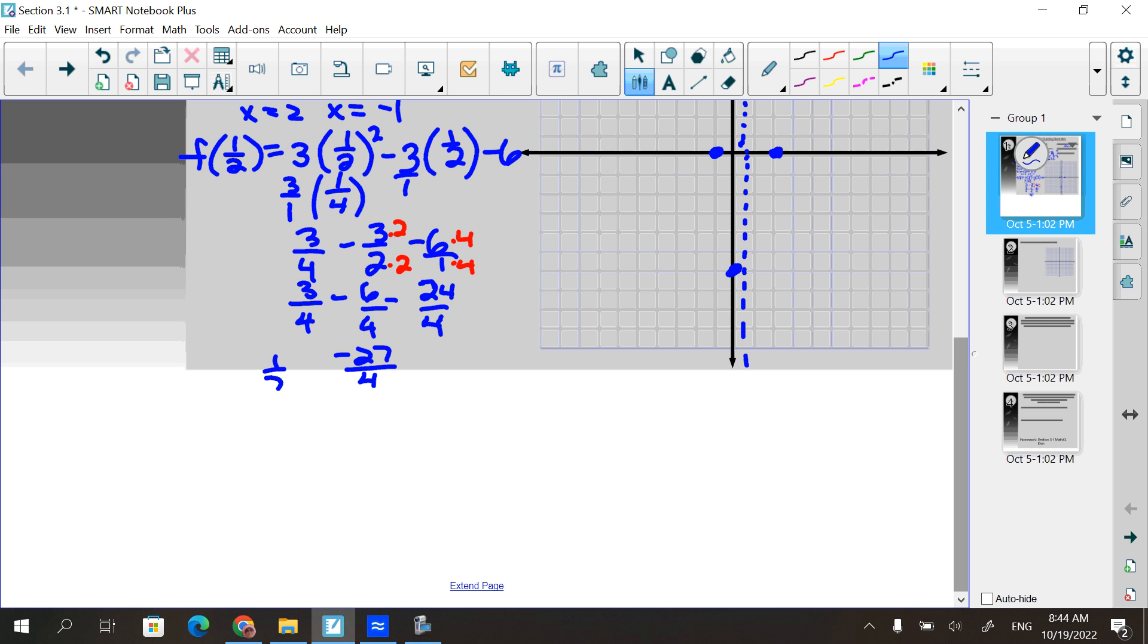So three minus six is negative three and negative three minus 24 is negative 27 fourths. So that means our vertex is at this point right here. Now negative 27 fourths, what is that? Negative six and three fourths? Is that about right? So if I go to the right one and I go down, or is that negative seven? No, that's 28. That's right, right? Six, 24, 25, 26, 27.